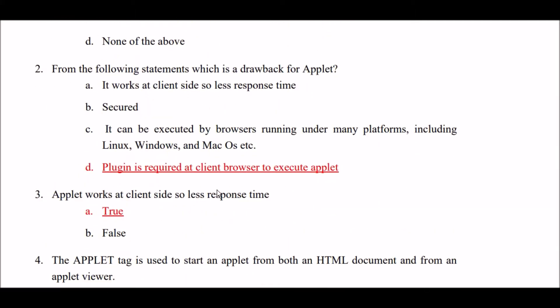From the following statements, which is a basic drawback of applet? Option A: it works at client side, so less response time. Option B: secured. Option C: it can be executed by browsers running under many platforms including Linux, Windows, and Mac OS. Option D: plugin is required at client browsers to execute applet. The right answer is Option D — plugin is required at client browser to execute an applet program.